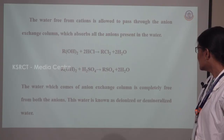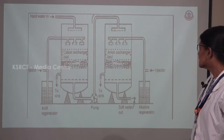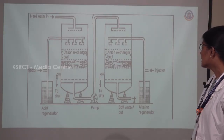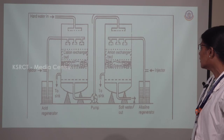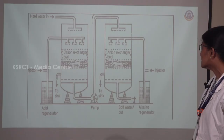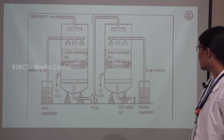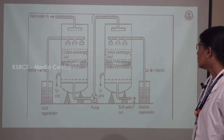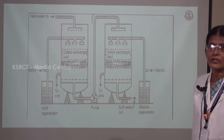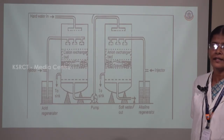The water coming out from the anion exchange column is completely free from anions and is known as demineralized water or deionized water. The picture shows the removal of cations and anions: the first column is packed with the cation exchange resin, the second column with the anion exchange resin. Hard water enters through the inlet; through the second column's outlet, soft water is collected. In the first column cations are removed, in the second column anions are removed, and the resulting soft water is totally free from both cations and anions.